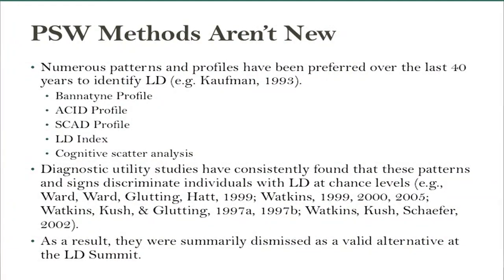These methods are not new. We have been prophesying various permutations, signs, and scatter profiles for LD identification and cognitive tests going all the way back to the 60s.